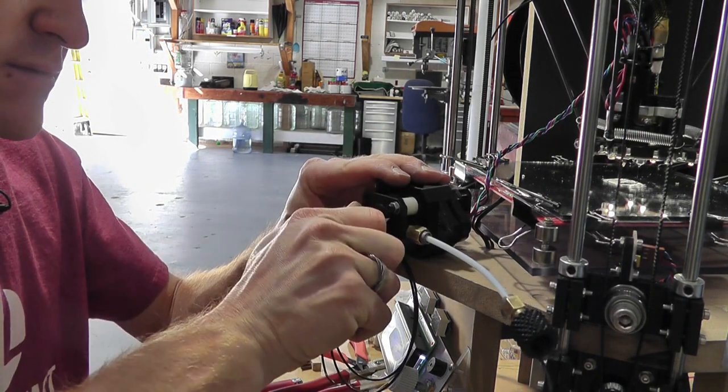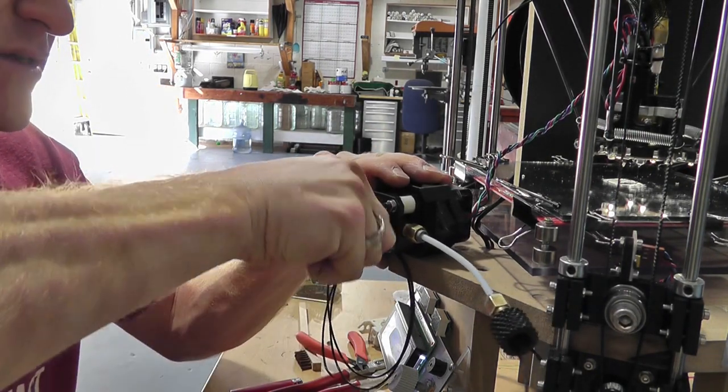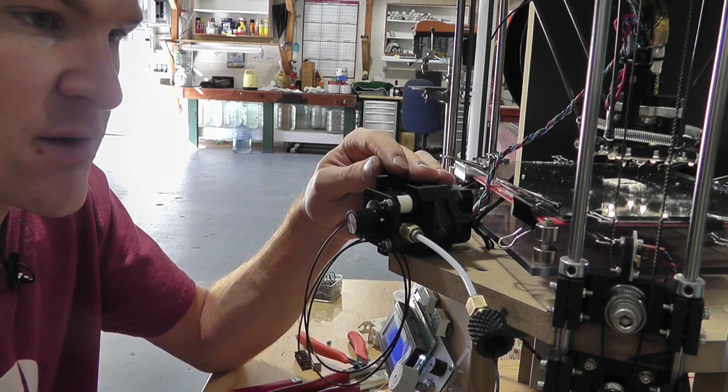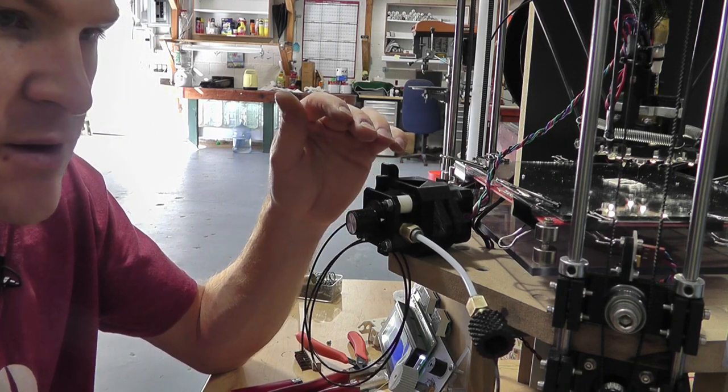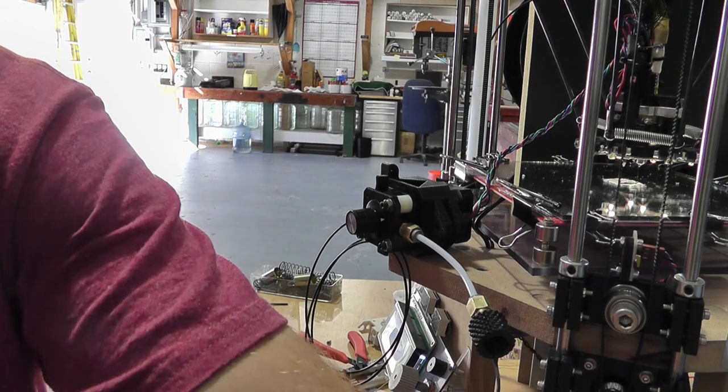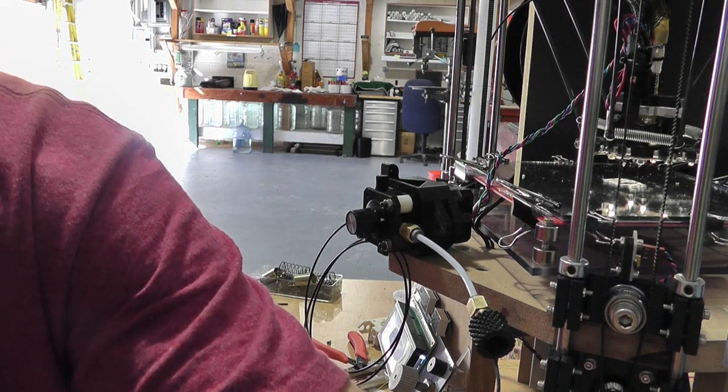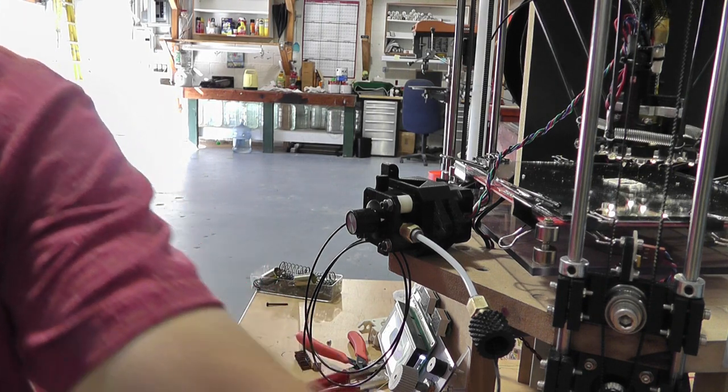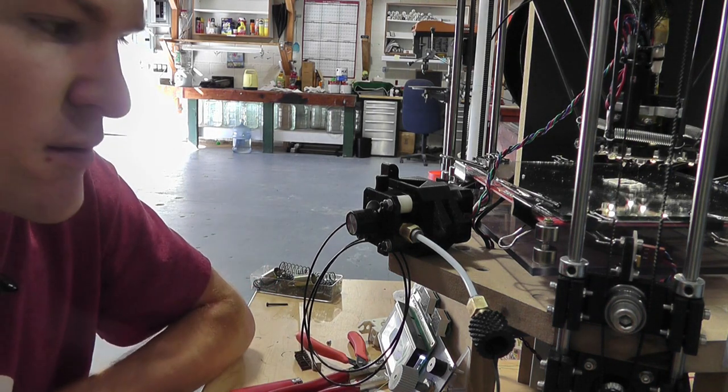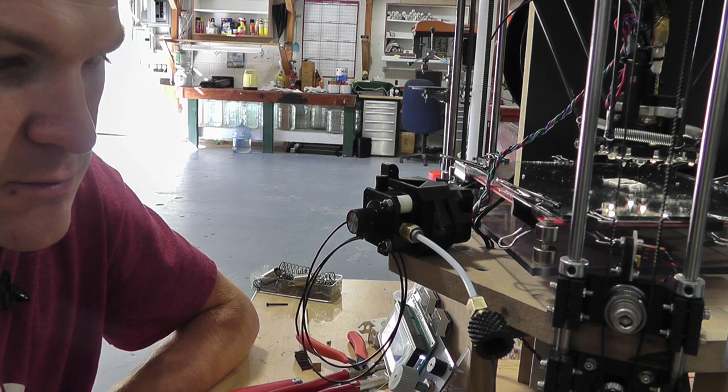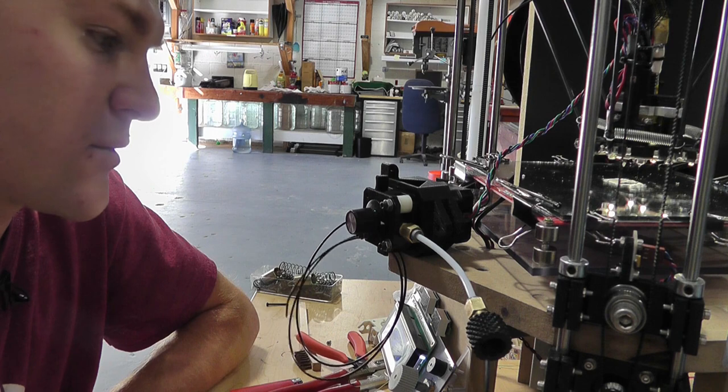I added this knob on here just so I can manually turn it. It's something I've always wanted to add to this, and I never could fit it on there. So if we do, let's see, extrude 20 at 500. And here we go.